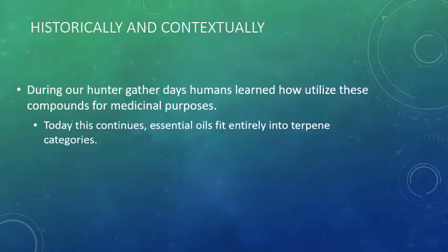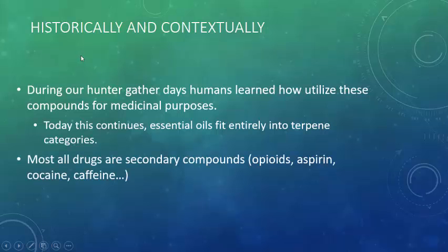Today this practice continues, though somewhat more processed, and the category of essential oils is exclusively terpene-based. The oils that you buy — lavender oils, citrus oils, turmeric oils — these are all essential oils and they are all terpenes.